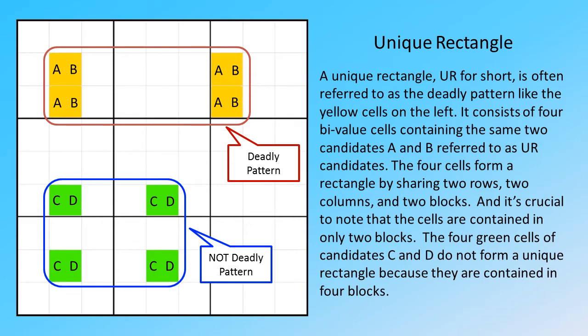A unique rectangle, UR for short, is often referred to as the deadly pattern, like the yellow cells on the left. It consists of four bivalue cells containing the same two candidates, A and B, referred to as UR candidates.